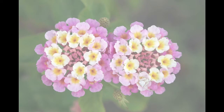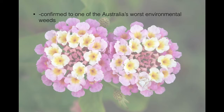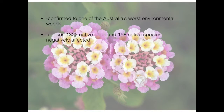According to research by the NSW Department of Environment and Climate Change (ECC), Lantana has been confirmed as one of Australia's worst environmental weeds. It affects 1,322 native plants and 158 native species, negatively impacted by its proliferation.